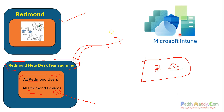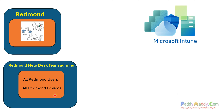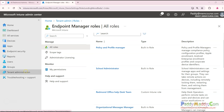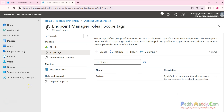Let's say I want to wipe a device — I would be granting wipe or policy configuration permissions to the Redmond Help Desk Team. Now let's look at where scope tags are configured. If you go to Tenant Administration and Roles, there is something called Scope Tags — this is where you create a scope tag. By default, there is a default tag, meaning all resources and objects are assigned the default scope tag.